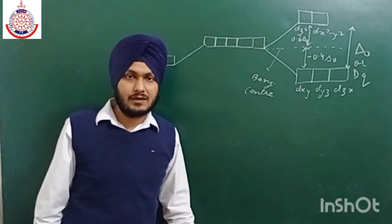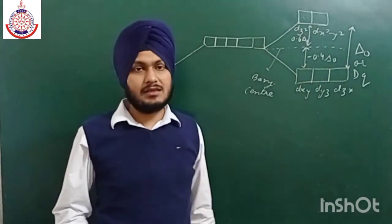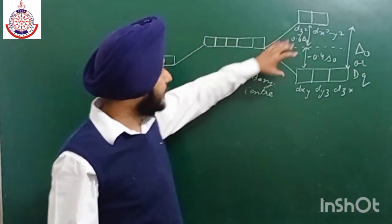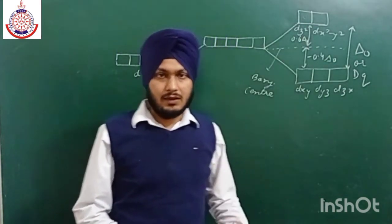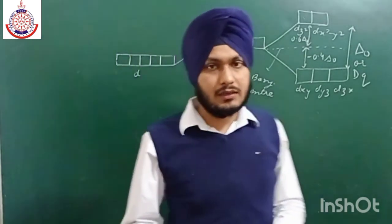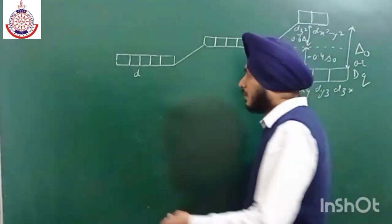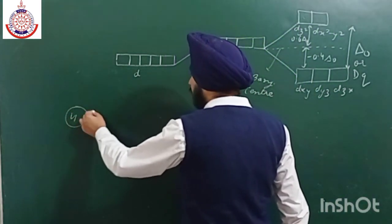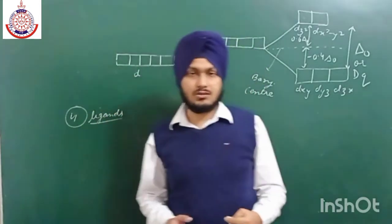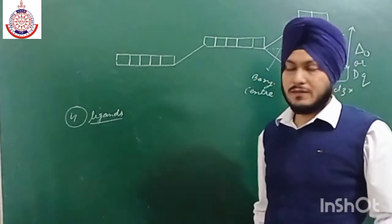Now we can easily calculate the CFSE value. The gap between the orbitals is known as Δo — Crystal Field Stabilization Energy. This splitting depends upon the nature of the ligand, which I will explain later. In the tetrahedral case, four ligands have to approach the five orbitals.